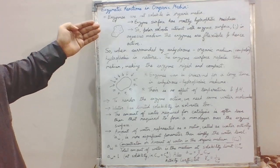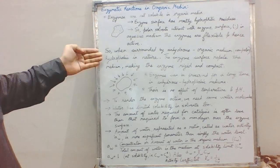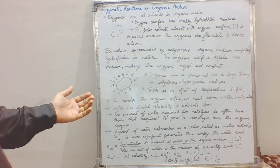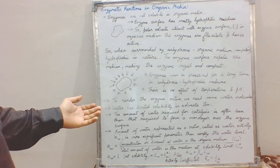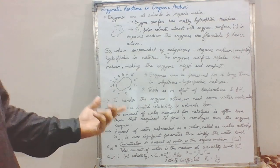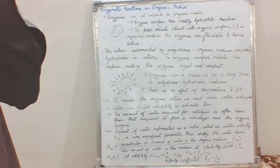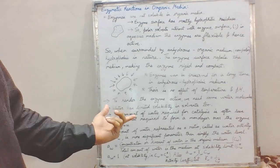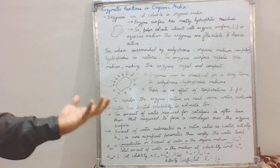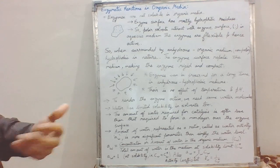Enzymes are rigid in organic solvents, so a certain amount of water is required in the organic media as well. If we are using an anhydrous, non-polar, hydrophobic medium, we require some amount of water to enable the enzymes to work. However, water has limited solubility in organic solvents — it is not easily miscible in all proportions, but the organic solvent does allow some amount of water within it.